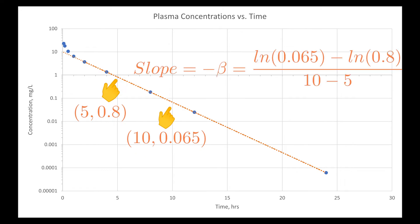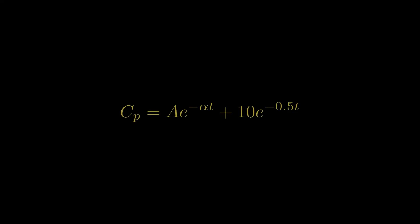And plug in our numbers to get a slope of negative 0.502, which truncates to a beta equal to 0.5. This gives us the right side of our expression.